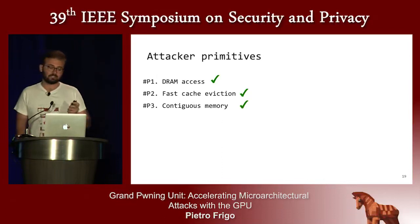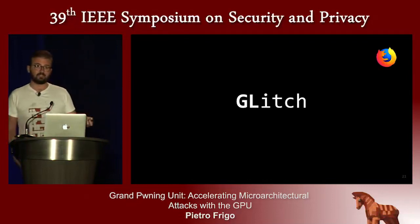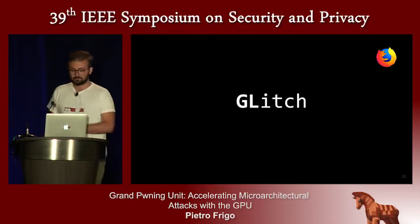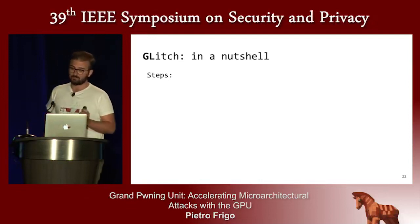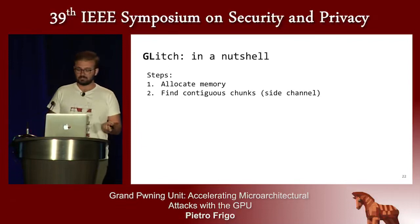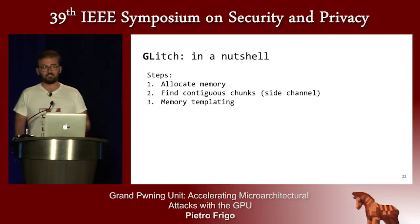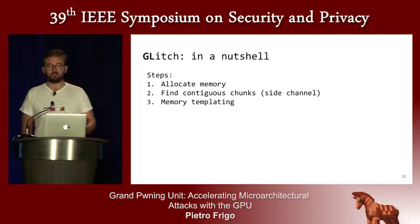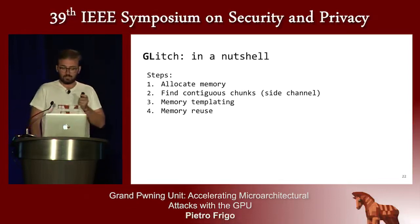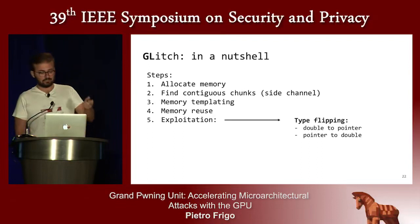Now we have all our primitives. The goal was to build an end-to-end remote rowhammer exploit, and we did this targeting the Firefox browser. Let me introduce Glitch. Glitch runs in five steps. First, we allocate enough memory to eventually get contiguous chunks. Then we use our timing side channel to detect these chunks. Afterwards we do memory templating — looking for exploitable bit flips. Since bit flips are reproducible, you first find them in memory you control via textures, then reuse that memory location with sensitive data and flip those bits. You release the memory, reuse it with sensitive data, and exploit it.